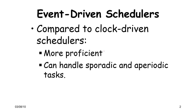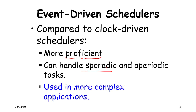Go back to lecture 4 for the discussion on proficiency. Proficiency basically means that event-driven schedulers can schedule more sets of tasks as compared to other traditional clock-driven schedulers, and can handle sporadic and aperiodic tasks quite easily — not an issue.